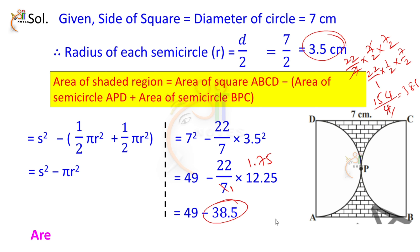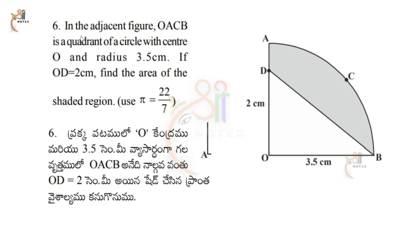That is the shaded region of this figure. Question number 6: in the adjacent figure, OACB is a quadrant of a circle with center O and radius 3.5 centimeters. If OD equals 2 centimeters, find the area of the shaded region. Use π equal to 22 by 7.